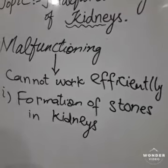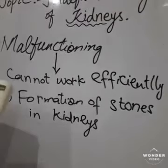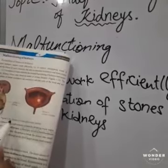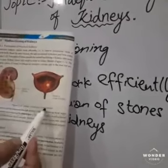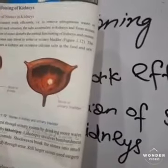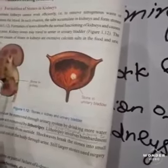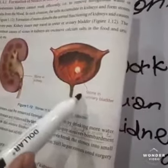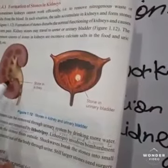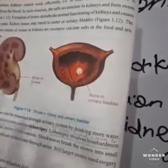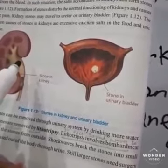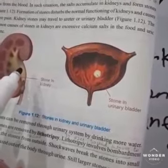Here I will show you from your book. You can see — this is stones in the kidney and urinary bladder. Here is the stone in the kidney and here is the stone in the urinary bladder. In this condition, urine cannot be passed out easily and it is very painful.